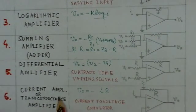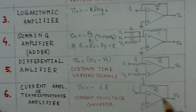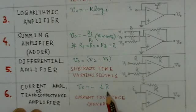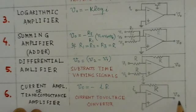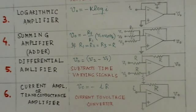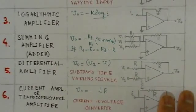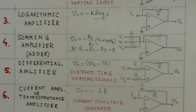The last circuit considered is the current amplifier, also called a current-to-voltage converter or transconductance amplifier. It is a simple circuit with resistance R in the feedback path, and V0 equals minus I times R. By varying R, you can get different output voltages for the same input current. These circuits have been described to familiarize you with op-amp configurations that may appear in gate examinations. Thank you.